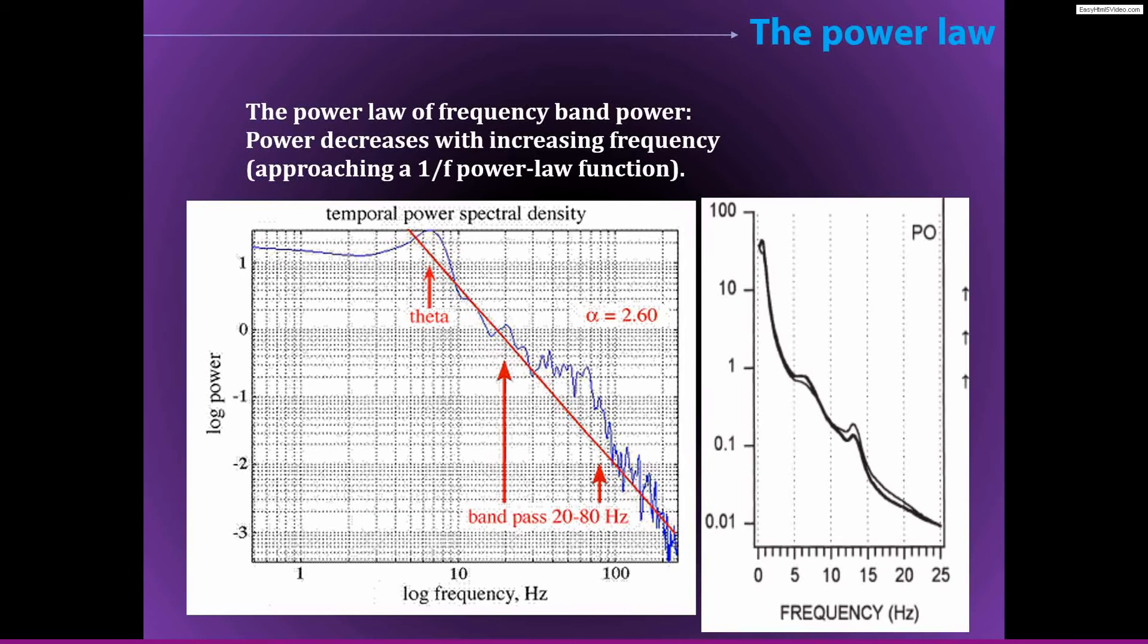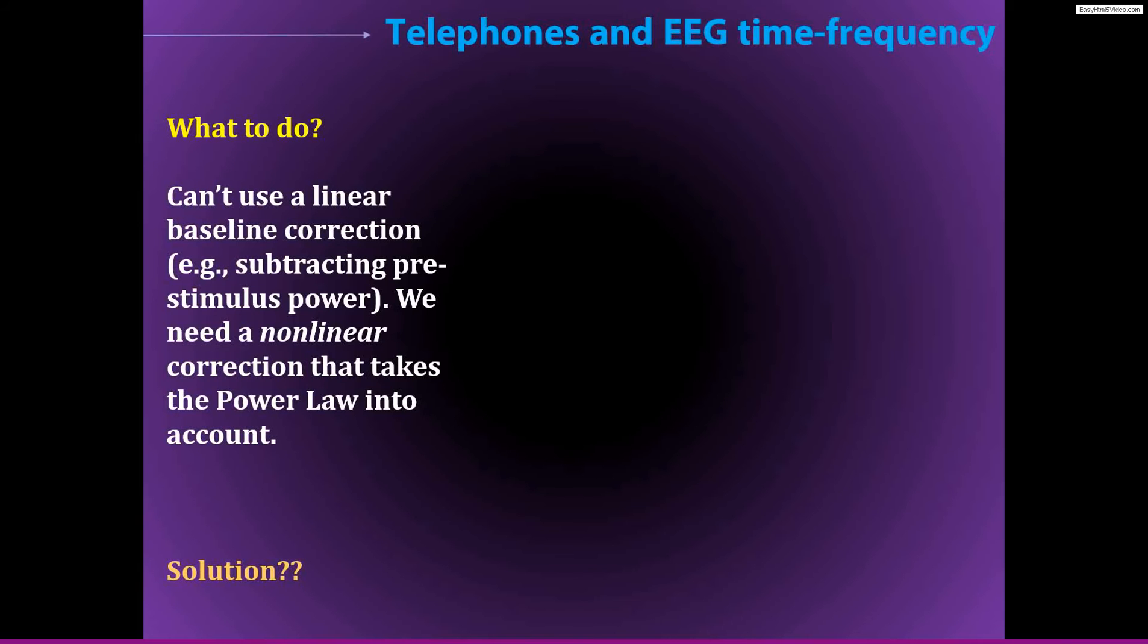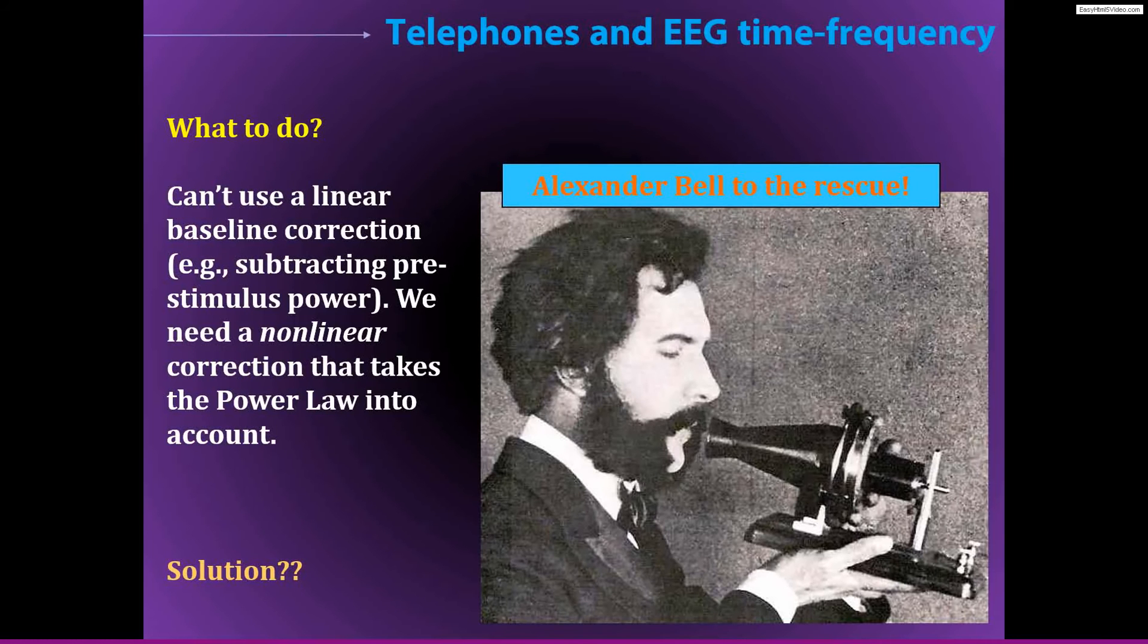This was due to something called the 1 over f power law scaling. It's this empirical observation that frequency-band-specific activity, or the power of frequency-specific activity, generally decreases with increasing frequency. And so this causes several interpretive and statistical problems, and we want to address this somehow. It's really not possible to use a linear baseline correction, like something like just subtracting the pre-stimulus level of power. Instead, we need some kind of a nonlinear correction that takes this power law into account. The main solution is not using a subtraction, but using a division.